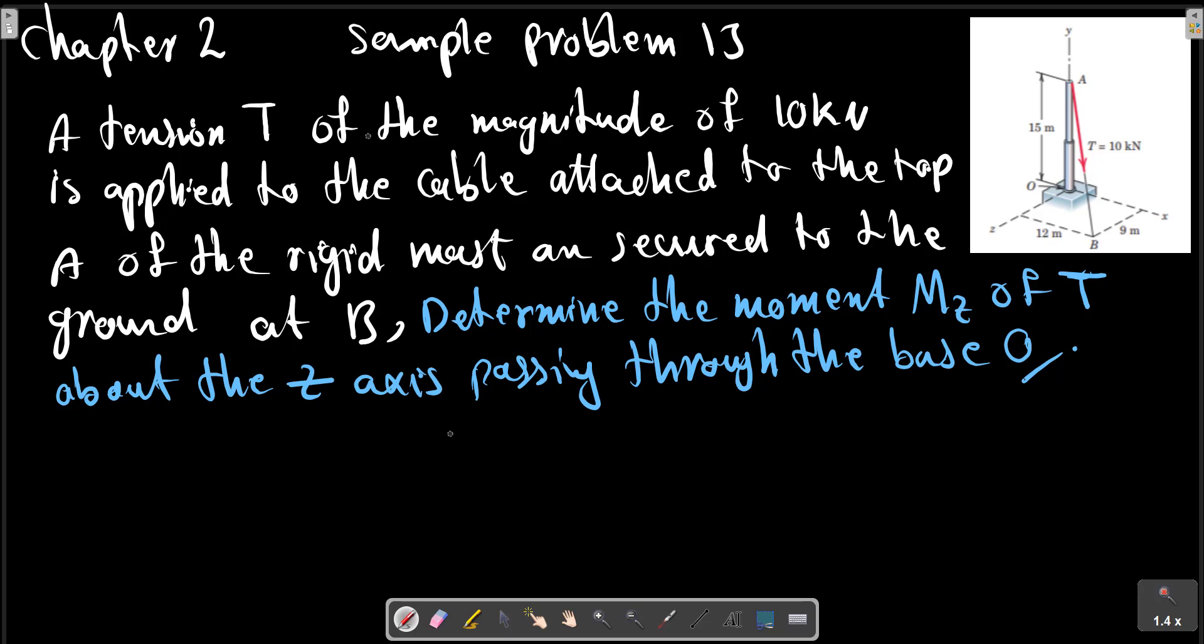To calculate the MZ, it is better to calculate the MO for the applied force. MO equals ROA cross T, where T equals 10 times NAB, and NAB equals AB divided by the magnitude of AB.